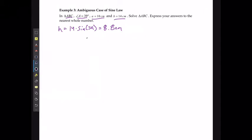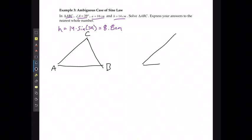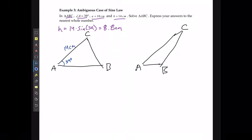I can have one where it's going to be an acute angle B. I can have one where it's going to be an obtuse angle B. I'm going to fill in the information that I know that's always going to be the same. This is going to be 39 degrees, this is going to be 14 centimeters, and this is going to be 10 centimeters. Same thing here: 39 degrees, 14 centimeters, and 10 centimeters.